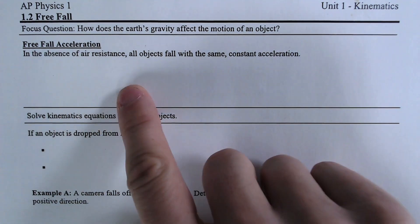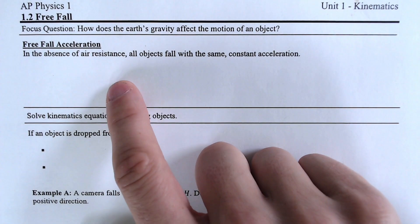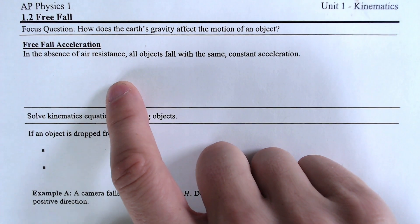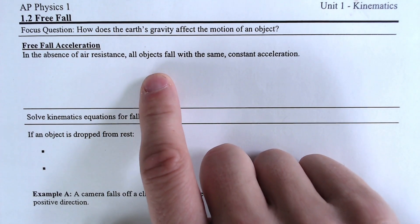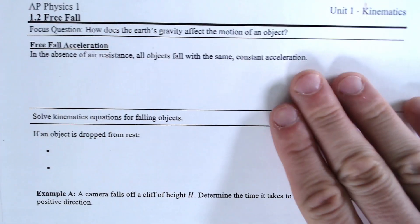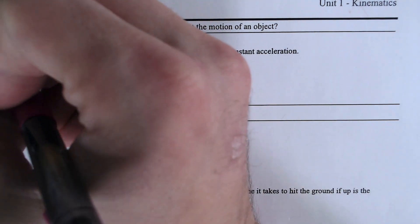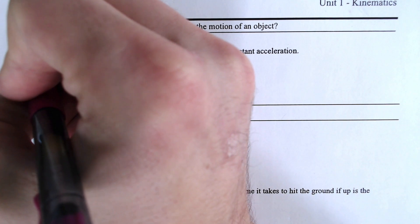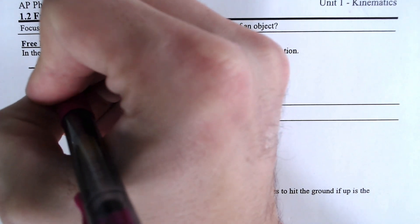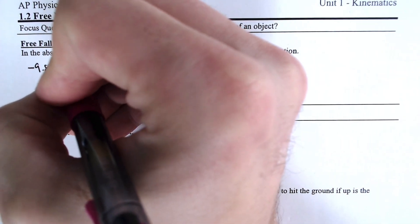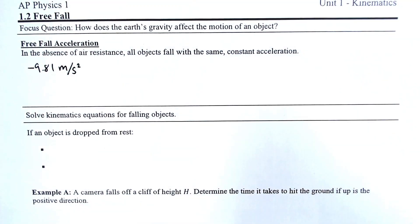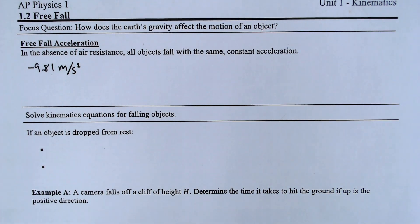In the absence of air resistance — and almost all the things you're going to be dealing with in the beginning will have no air resistance — all objects will fall at the exact same constant acceleration, and that is negative 9.81 meters per second squared. And that would be gravity.